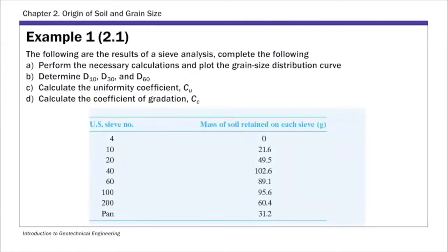The first example covers sieve analysis results. The data consists of the sieve number used, the corresponding opening from the table, and the mass of soil retained on each sieve. We're going to perform the necessary calculations to plot the PSD curve, then determine D10, D30, D60, and calculate the coefficients of uniformity and curvature.